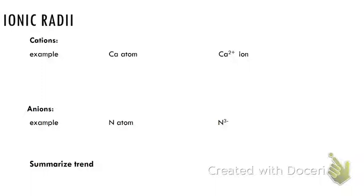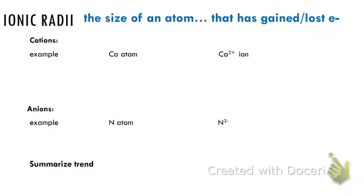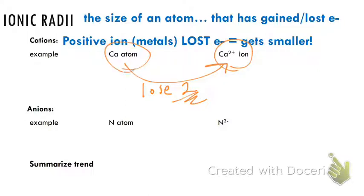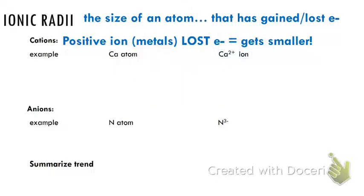Ionic radii are almost the exact same thing — instead of talking about the size of an atom, we're talking about the size of an ion, which is just an atom that's gained or lost electrons. For cations — positive ions that tend to be metals — they've become positive because they've lost electrons, which means they're getting smaller. So when calcium turns into Ca²⁺, it lost two electrons and got smaller. We need to remember the vocab: cation and anion — very important words.